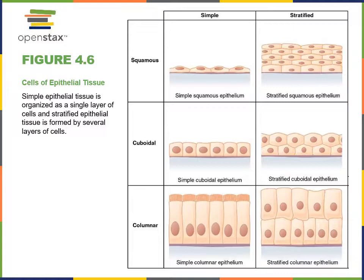Starting at the top left, a simple squamous epithelium is just one layer of flat cells that have a height less than their width. A simple cuboidal epithelium is one layer of round cells that have a cube shape with their width approximately equal to their height. And a simple columnar epithelium is a single layer of tall cells where the height of the cell is greater than the width.